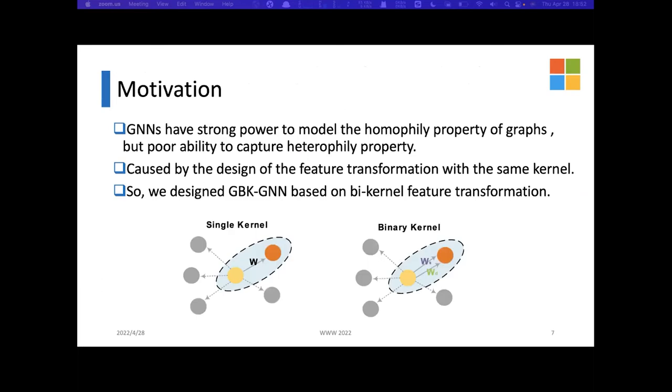Now we have already known that common GNNs such as GCN have strong power to model the homophilic properties of graphs, while their ability to capture heterophilic properties is often doubtful. This is partially caused by the design of the feature transformation with the same kernel. One kernel cannot model the similarity and dissimilarity between node features at the same time, and cannot adaptively model the nodes with different node-level homophilic ratios. To solve the problem,